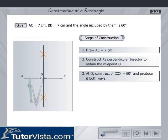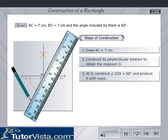At O, construct angle COX is equal to 60 degrees and produce it both ways.